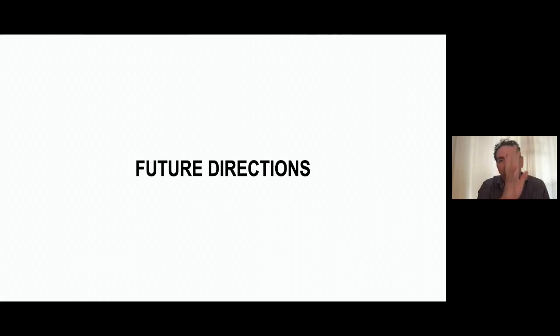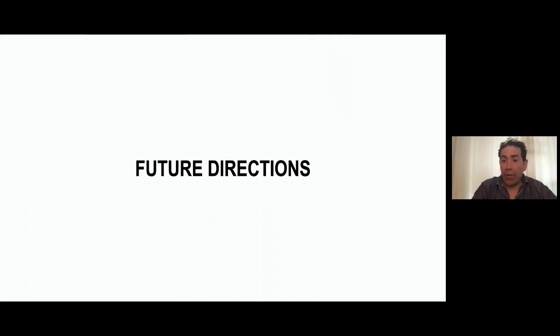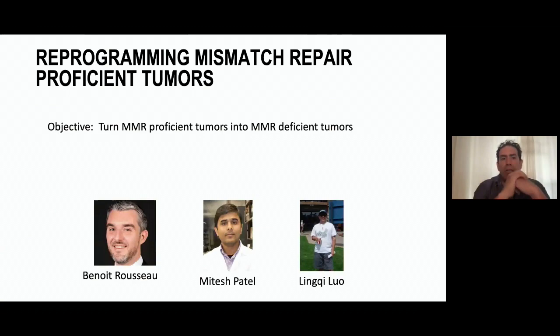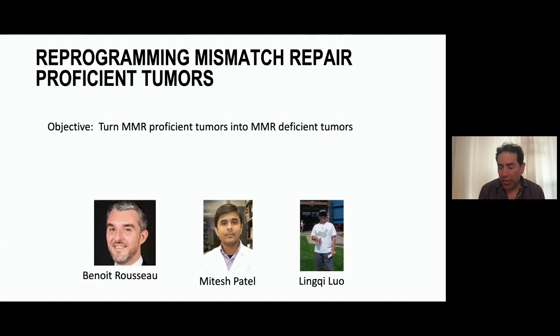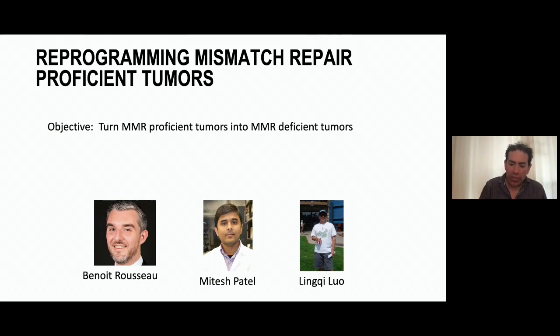Going forward, we can fine-tune therapies and add combinations for higher response rates, move therapy to earlier lines in adjuvant and neoadjuvant settings — those studies are ongoing. But a key question is: can we reprogram mismatch repair proficient tumors and turn them into deficient ones? Colleagues Benoit Rousseau, Mitesh Patel, and Chih Luo have taken on this project — the objective is to turn mismatch repair proficient tumors into deficient tumors pharmacologically.